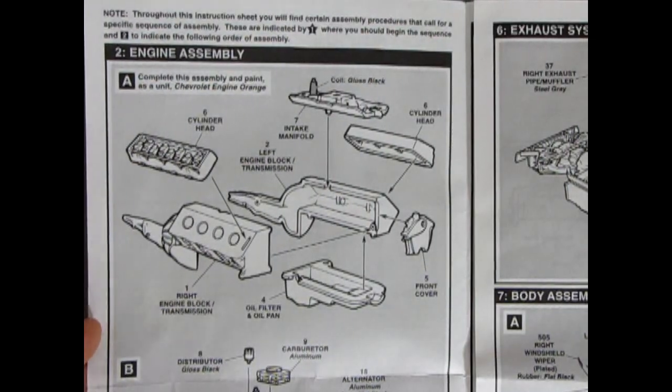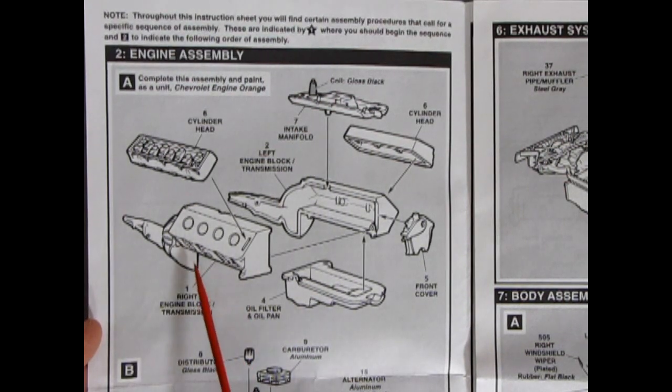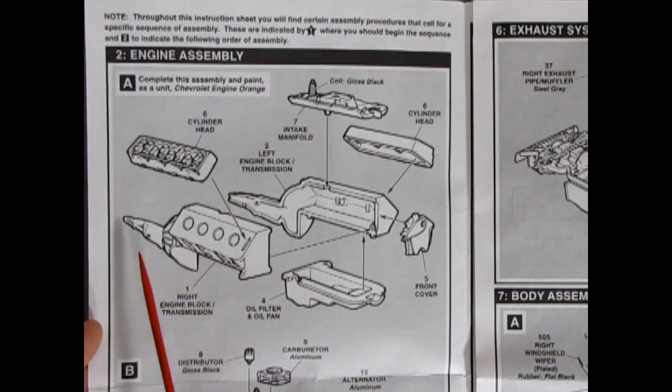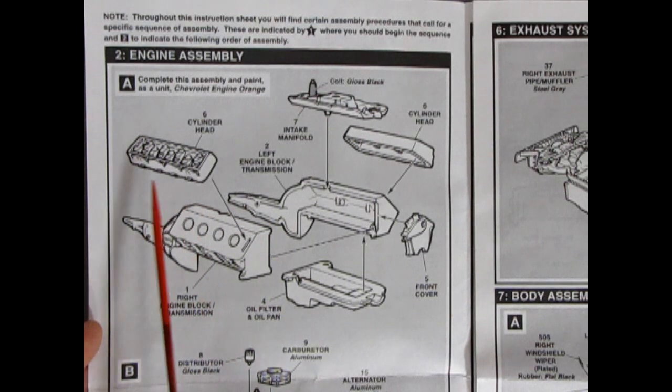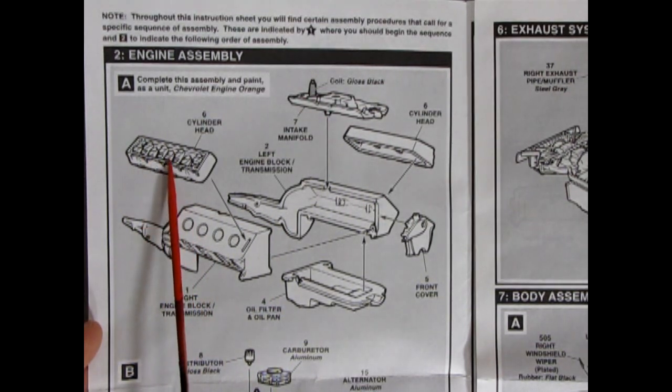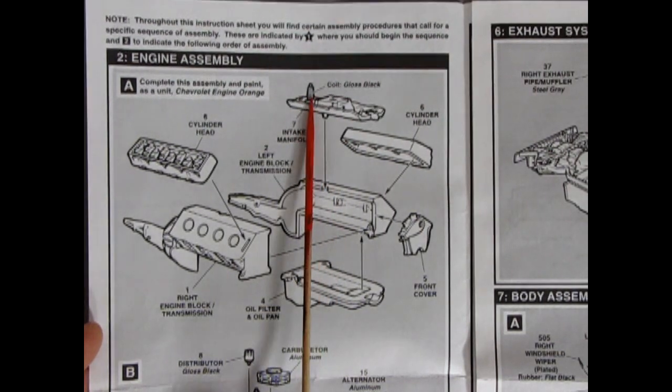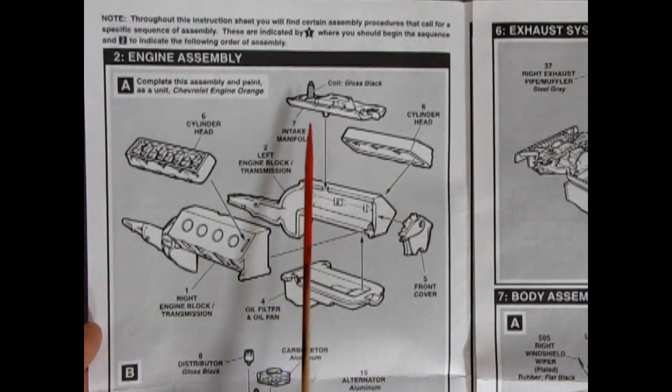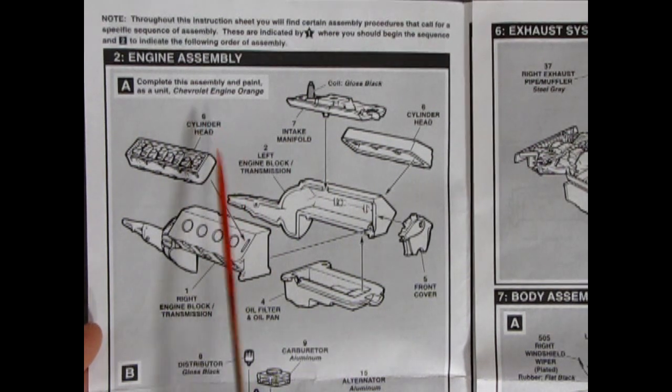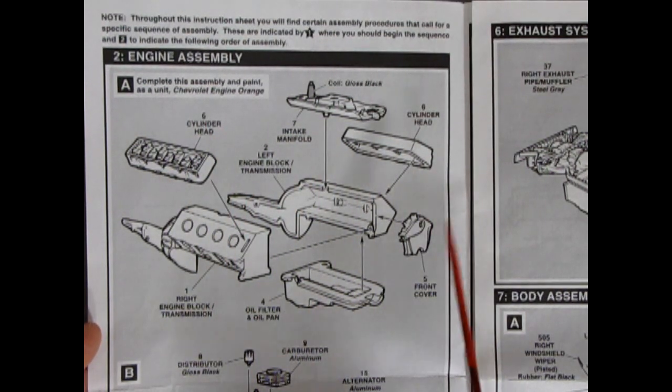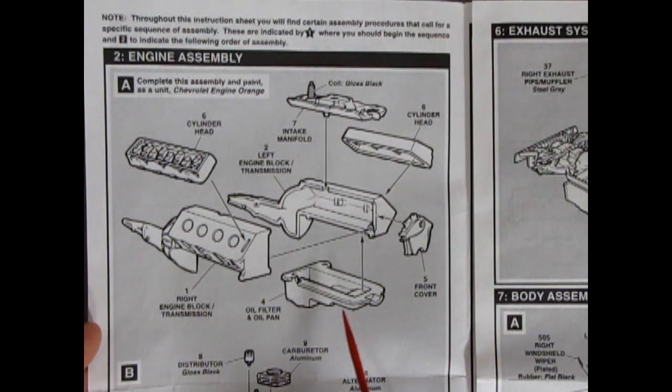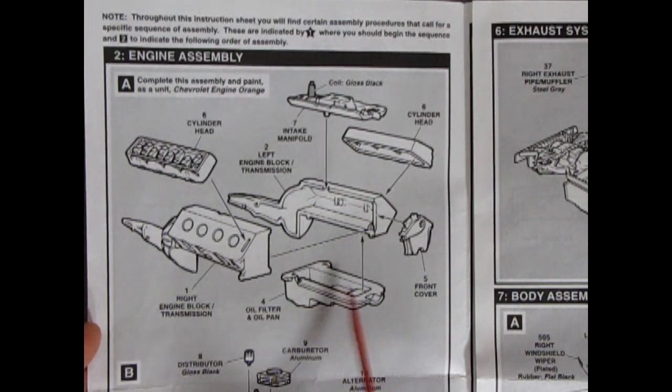Okay so here we have our engine. Again you got your right and left engine block with the transmission molded on. Cylinder head and it's nice it has the valve rockers on the top here. Then you've got your intake manifold with a coil molded on. It says to paint it all Chevrolet engine orange.